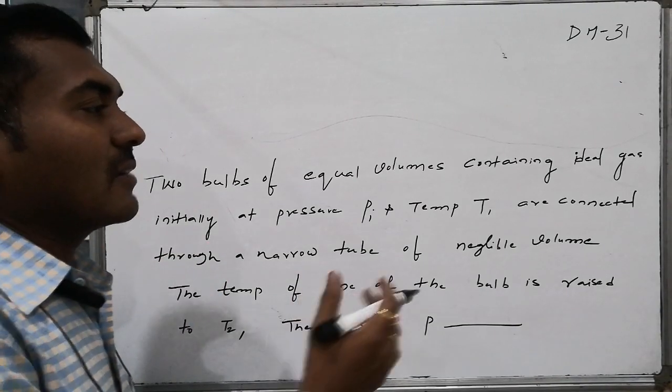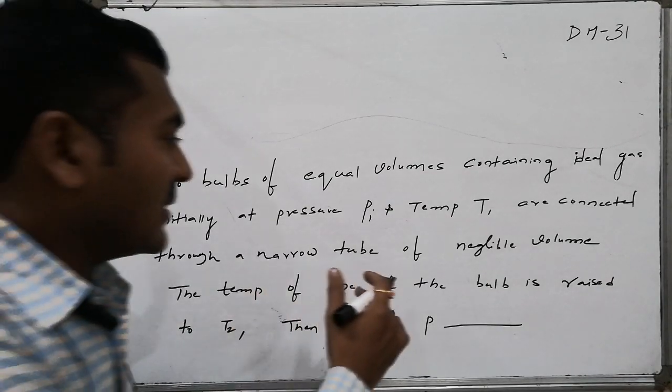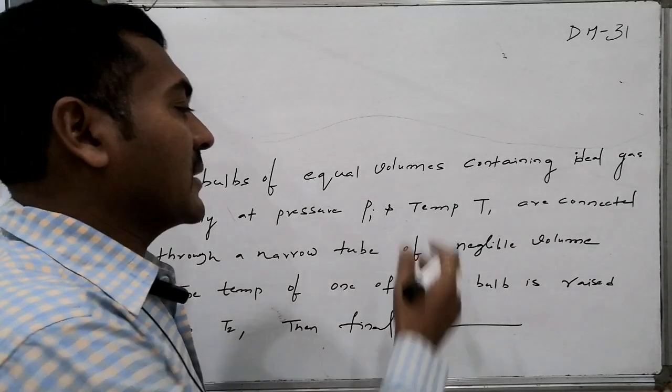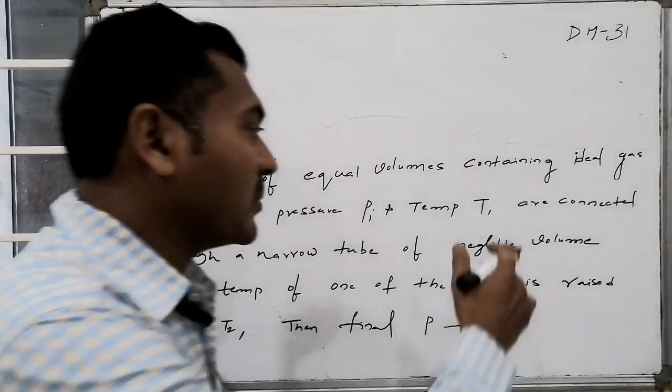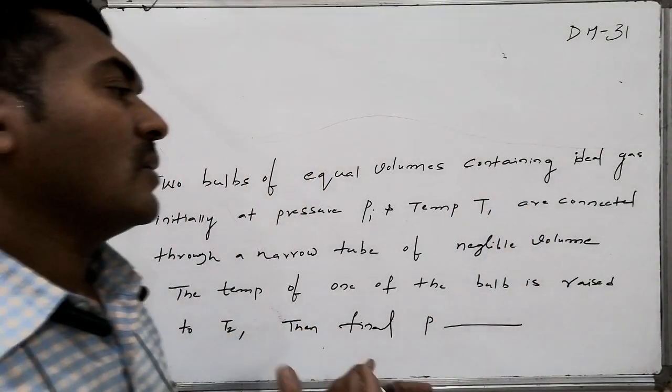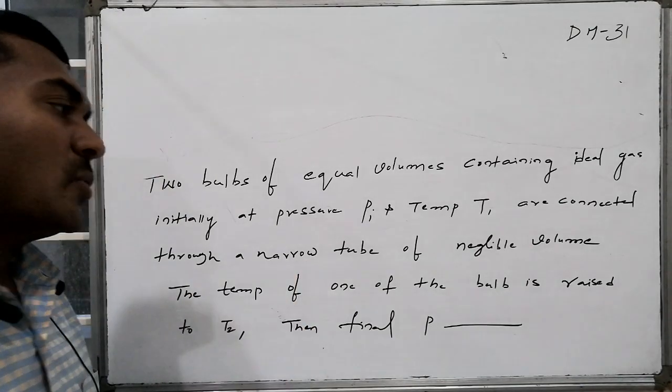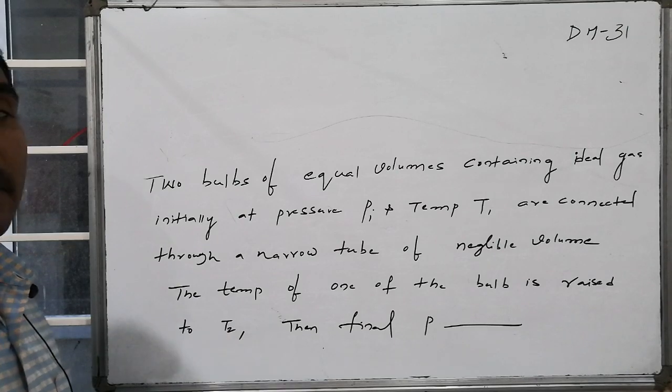There are two bulbs of equal volumes containing ideal gas. Initially the pressure is Pi in each gas, and the temperature of each cylinder is T1. These two bulbs are connected through a narrow tube of negligible volume.